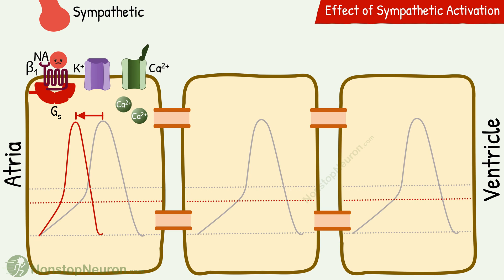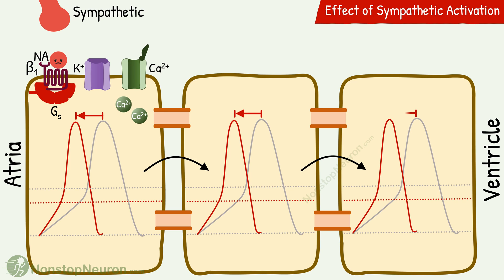Similar changes occur in other cells also. So when one cell excites the next cell, it's excited faster. Similarly, all cells are excited faster. So it takes less time for the impulse to pass from one end to the other end. In other words, conduction velocity is increased. Thus, sympathetic stimulation increases conduction velocity in the AV node.